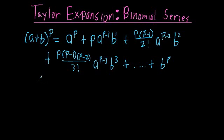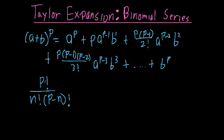Binomial coefficients can be written as p factorial divided by n factorial times (p minus n) factorial, where p is our exponent and n is which term in the expansion we're working with — so this would be the n equals zero term, the n equals one term, the n equals two term, and so on.